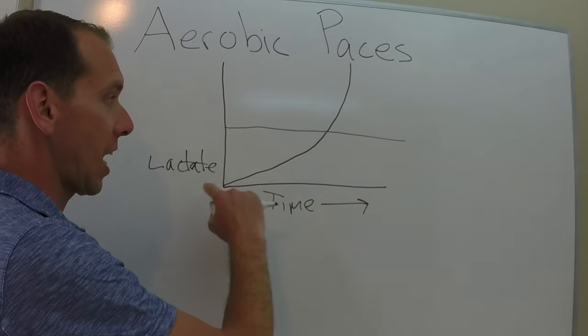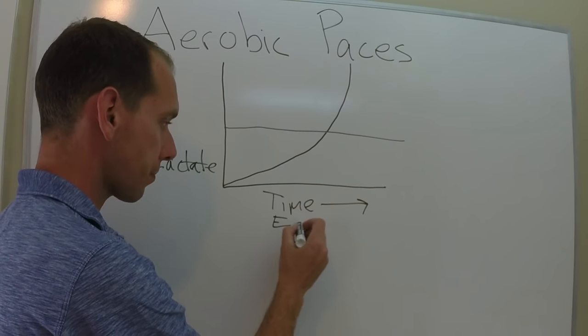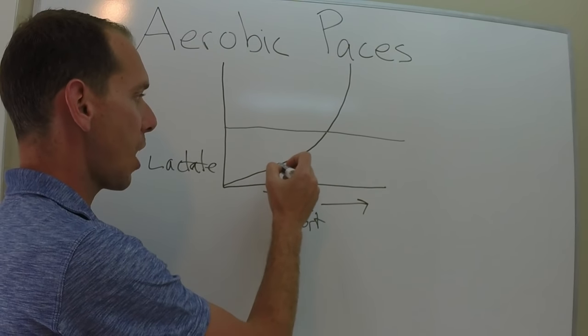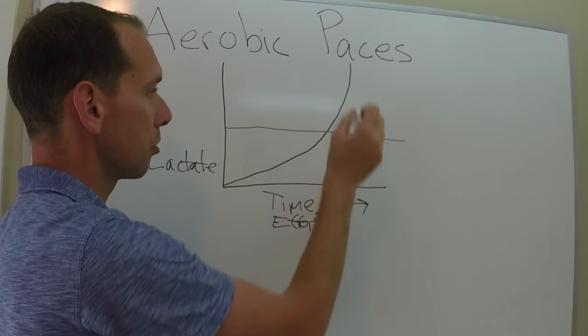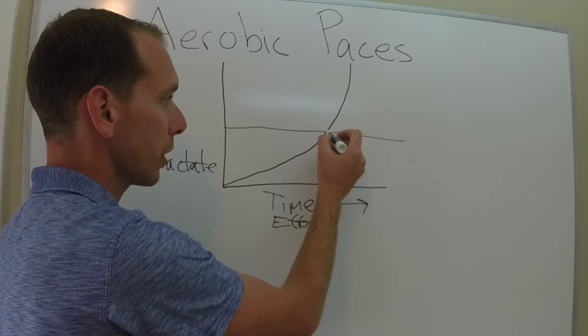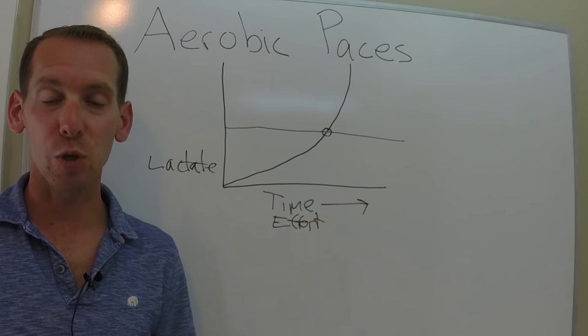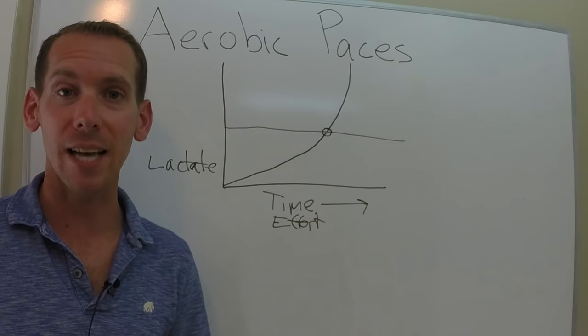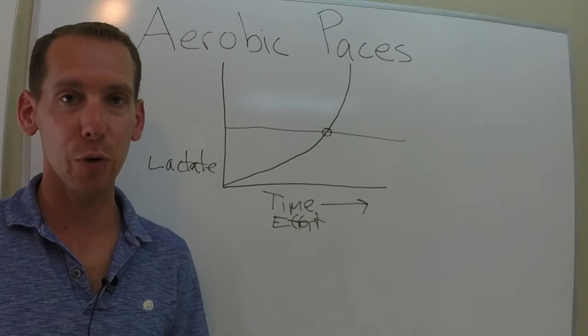So you can see as time goes on, and this is also effort, time and effort, as the effort goes up the amount of lactate that you produce also goes up. Once you reach this critical area right here that is where you are running anaerobically. So you're running without oxygen. You're producing so much lactate that you simply can't clear it as quickly as you're producing it.